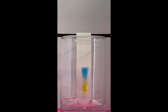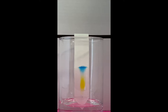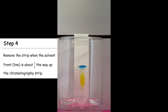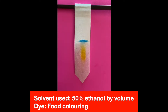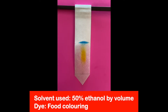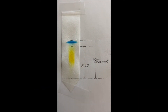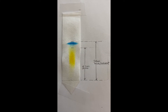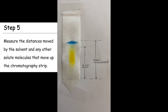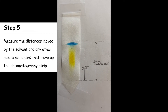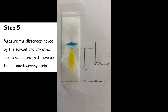The blue pigment moves with the solvent further up the strip while the yellow pigment stays closer to the baseline. The chromatography strip is then removed from the solvent and air dried. In this experiment the solvent was 50% ethanol by volume and the dye was green food coloring. The green dye separated into yellow and blue pigments. The blue pigment moved 5.7 centimeters from the baseline whereas the yellow pigment moved 4.7 centimeters.